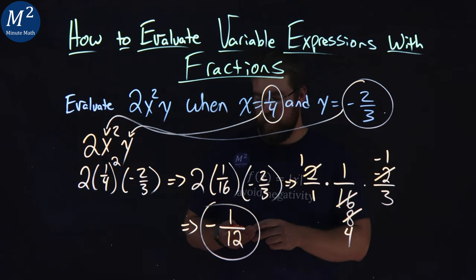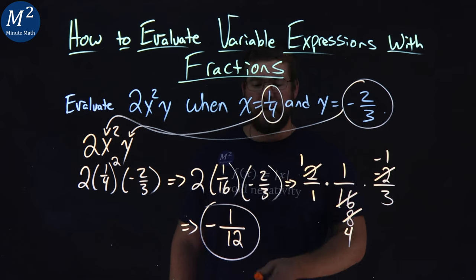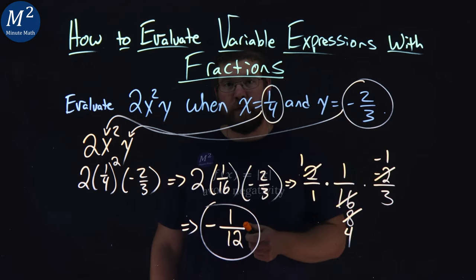And there we got it. 2x² times y, when x equals 1/4 and y equals negative 2/3, is negative 1/12.